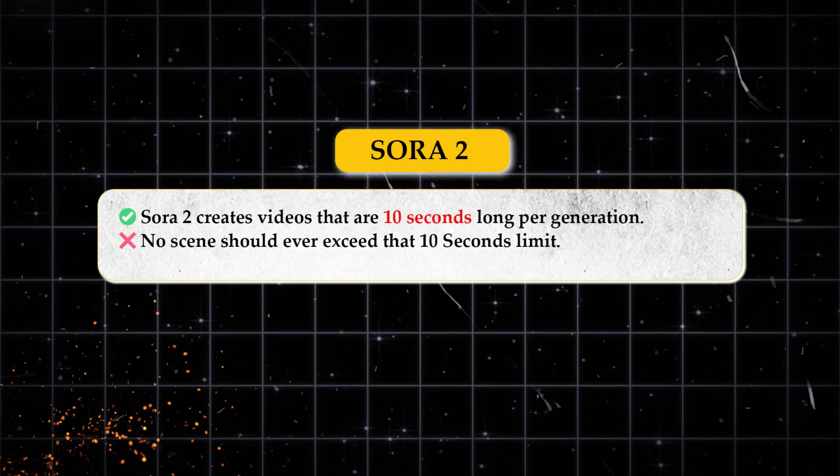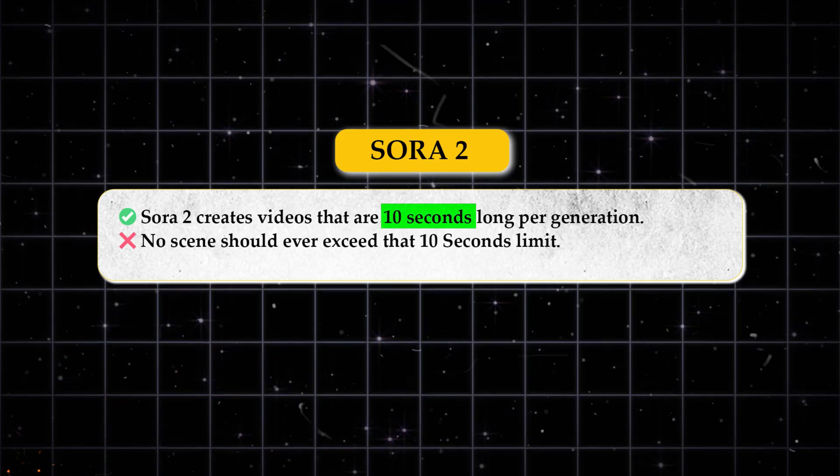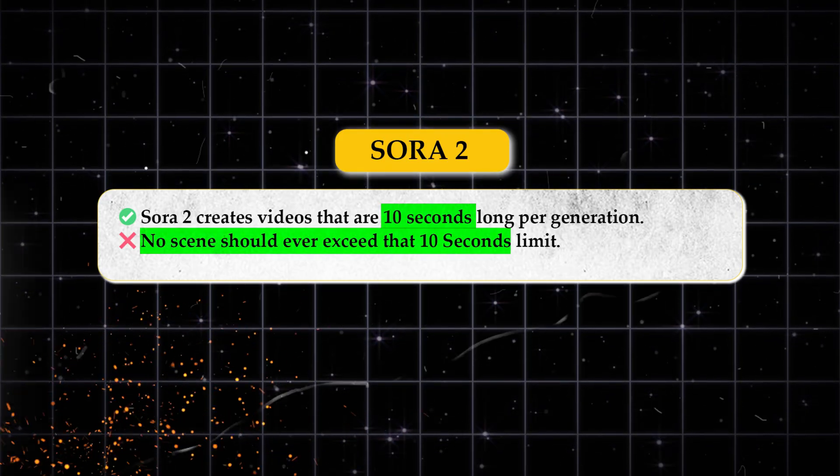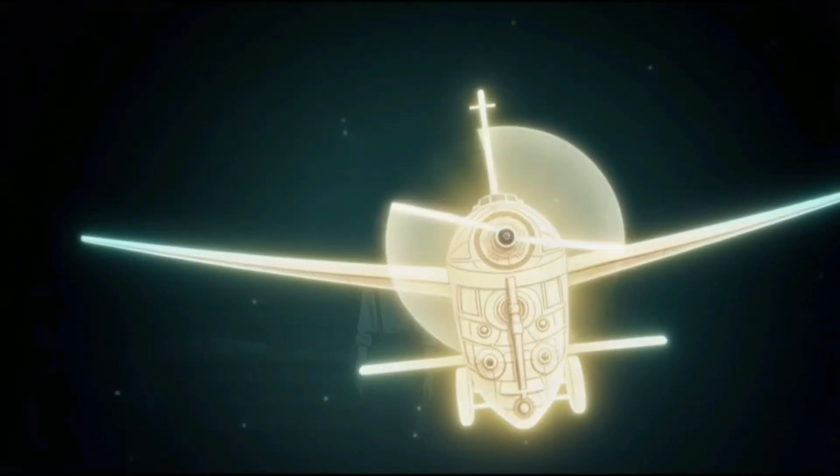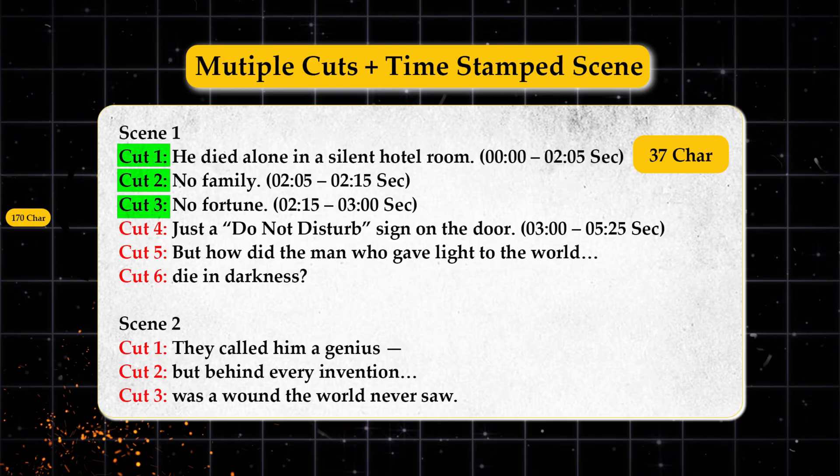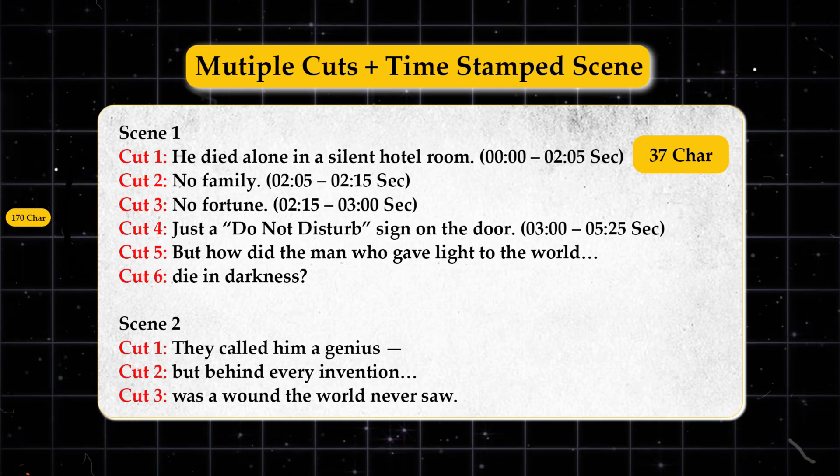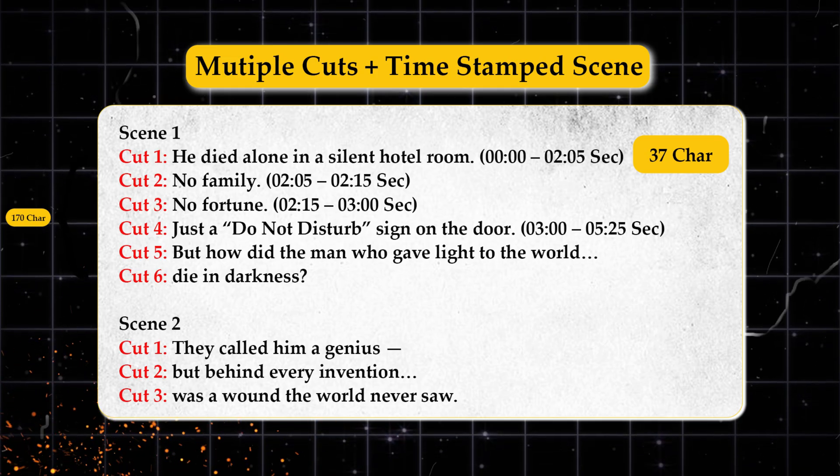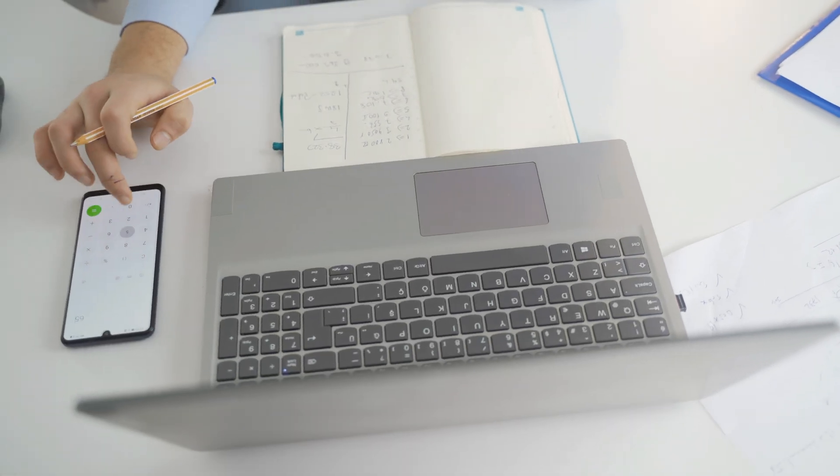Here's why it matters. We'll be using Sora 2 to generate our 2D animation clips. Sora 2 creates videos that are 10 seconds long per generation, so no scene should ever exceed that limit. And here's the cool part. Sora 2 can also create multi-cut videos with multiple camera angles and shots. That means each cut needs to happen exactly when your narration line ends. So here's the rule. We'll create one cut for every line of narration. Once one line ends, the next cut begins.